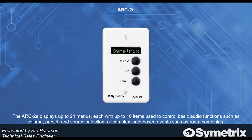Now let's talk about the Arc 2e. It's still a pretty powerful device — it can display up to 24 menus, each with up to 16 items, and can control basic audio functions, as can the Arc 3.